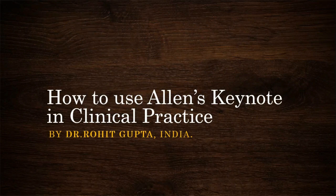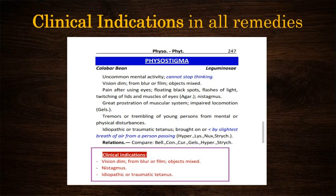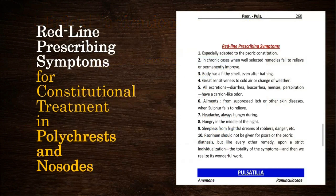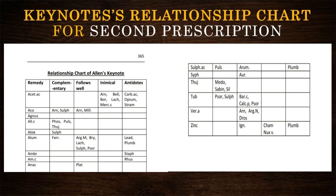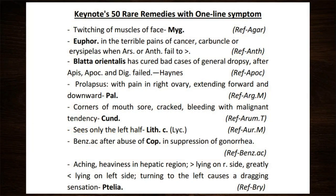Now, how to use Allen's Keynote in clinical practice. A lot of pathophysiological indications sorted from all remedies have been lastly added in clinical indication. The symptoms taken from the medicine necessary for constitutional treatment with proper case-taking according to Organon of Medicine 6th edition are in red-line-based symptoms. For easy searching of the remedy for second prescription, there is a chart prepared from the relationship section of all remedies from Allen's Keynote. There are many remedies with single-line symptoms but rarely used by physicians — all these rare medicines have been separated with their one-line indication and reference at one place in this new edition.